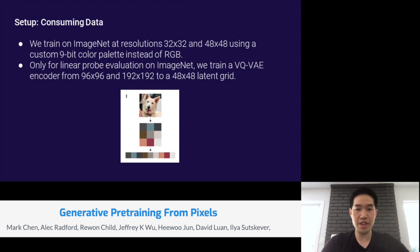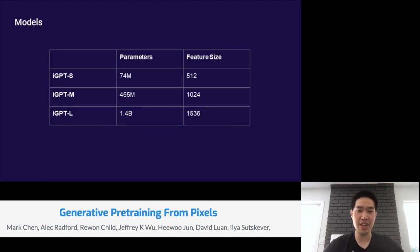There's also another detail here. Only for linear probe evaluation on ImageNet, we'll train a VQVAE encoder that goes from even higher resolutions, like 96 by 96 or 192 by 192, down into a 48 by 48 latent grid. This is motivated by trying to capture some of the higher resolution details in ImageNet, which are often important for ImageNet classification. We use VQVAE because in some sense it's a generalization of k-means.